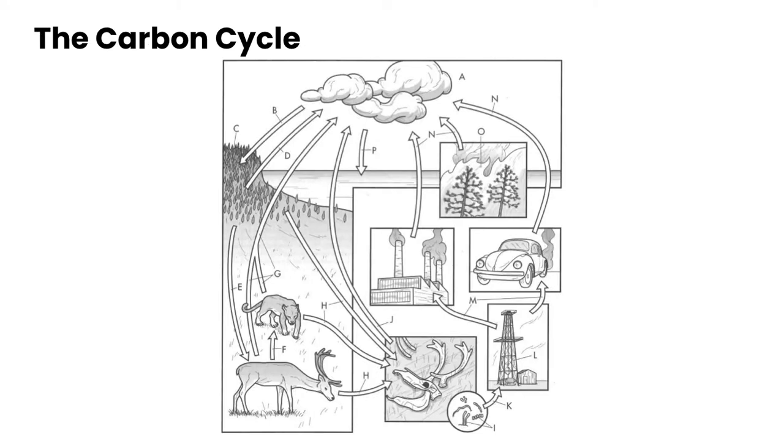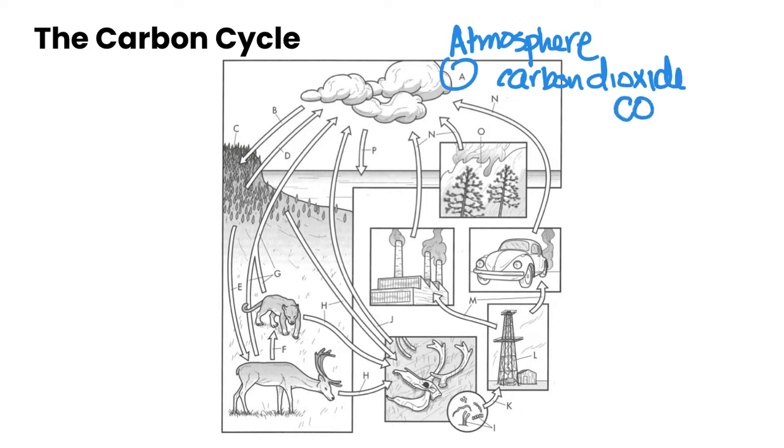So let's start in the carbon cycle in our atmosphere. So that is our label A, our atmosphere, and the atmosphere is actually a major reservoir of carbon for the earth in the form of carbon dioxide, which is also known as CO2.